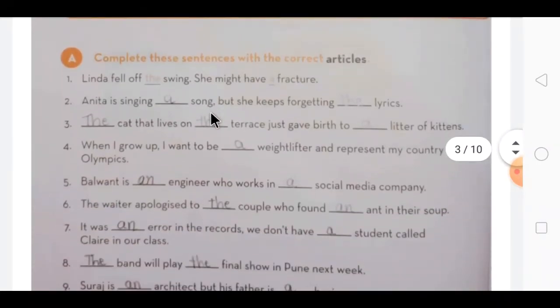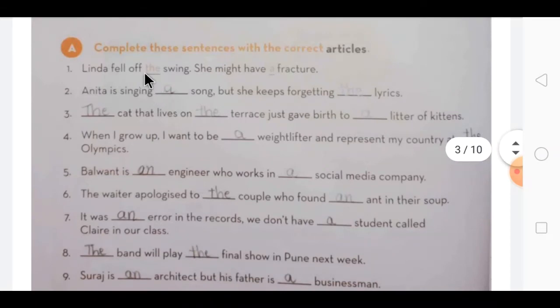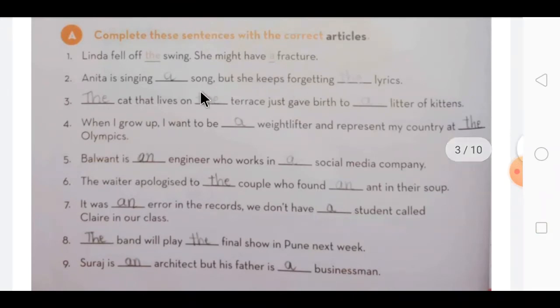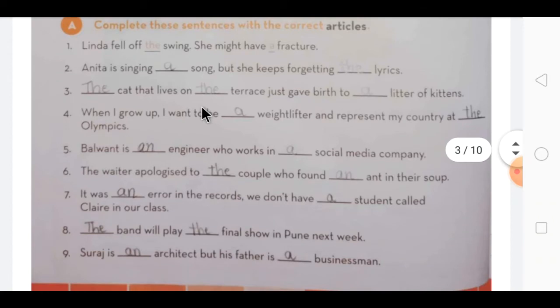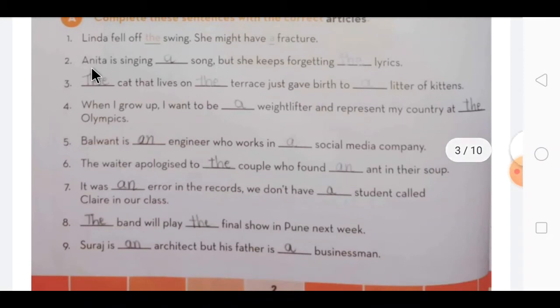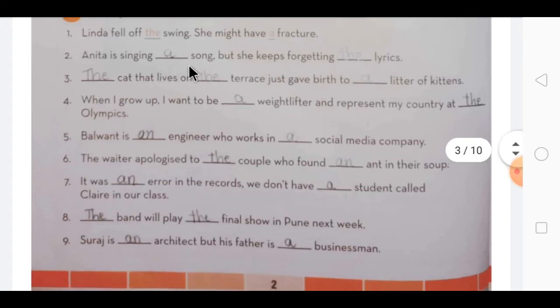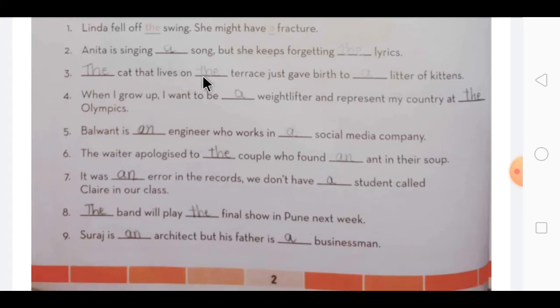Now our first exercise is related to articles only. You have to complete the sentences with the correct articles. With a pencil, how I have written, the same way you have to write it down. See here how it is given. Anita is singing a song, but she keeps forgetting the lyrics. In this, we are not knowing about the song, so we are using a. And we know what the lyrics are, so we use the.